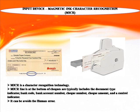Input Device: Magnetic Ink Character Recognition (MICR). MICR is a character recognition technology. A line at the bottom of a check typically includes the document type indicator, bank code, bank account number, check number, check amount and a control indicator. It can avoid human error.